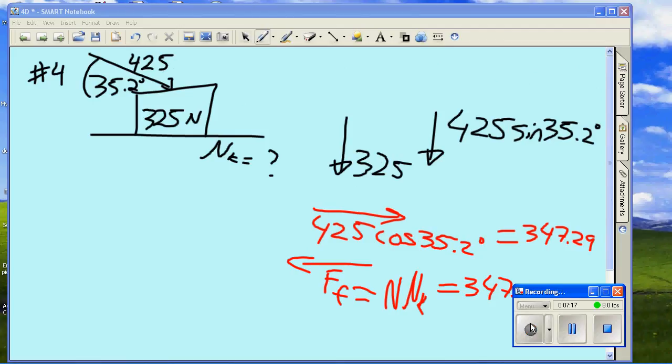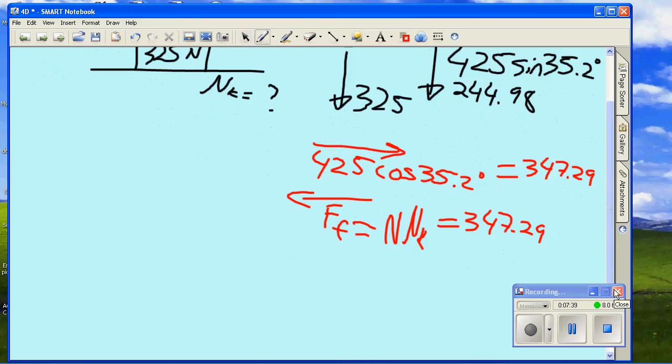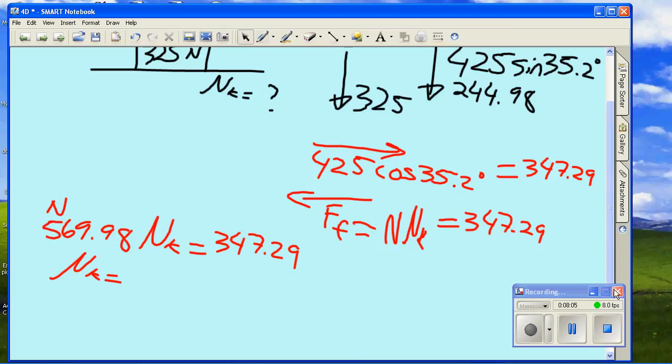The ground has to support two things: the 325 of the box, plus me pushing down at 244.98, giving me a ground total of 569.98. So I'll have normal force 569.98 times my coefficient of friction μk is equal to 347.29. So μk will equal 347.29 divided by 569.98 equals 0.61, which is what the book says.